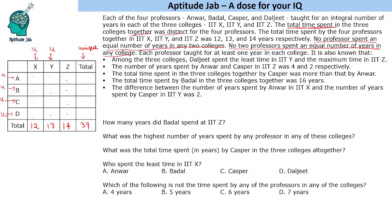Among the three colleges, Daljeet spent the least time in IIT-Y and the maximum time in IIT-Z. The number of years spent by Anwar and Kasper in IIT-Z was 4 and 2 respectively. The total time spent by Kasper was more than that by Anwar — so if Kasper spent X years total and Anwar spent Y years total, X is greater than Y. The total time spent by Badal in the three colleges together was 16 years. The difference between the number of years spent by Anwar in IIT-X and by Kasper in IIT-Y was 2.